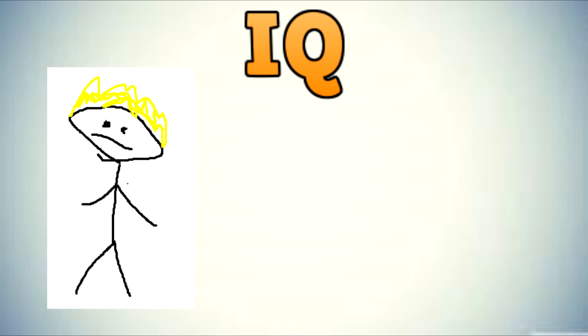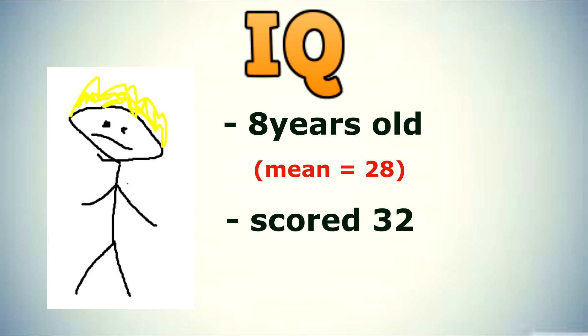So let's say we have Timmy. Timmy is 8 years old and scored 32 on an IQ test. The average score for an 8 year old is however 28. The average score for a 10 year old is also 32, just like Timmy.